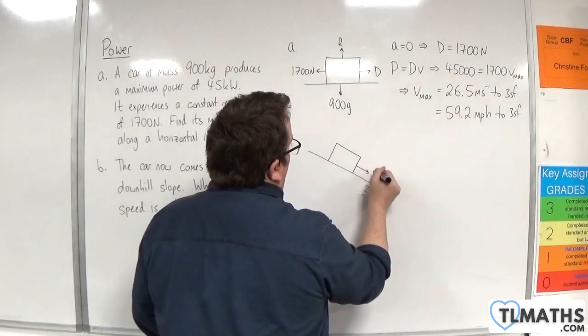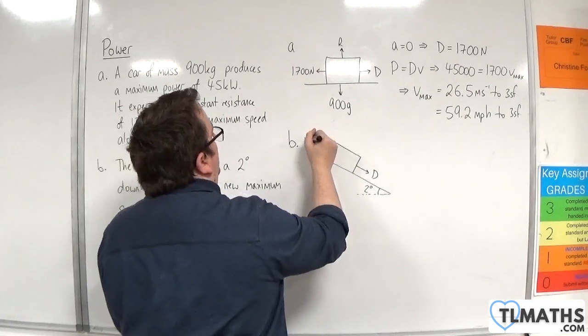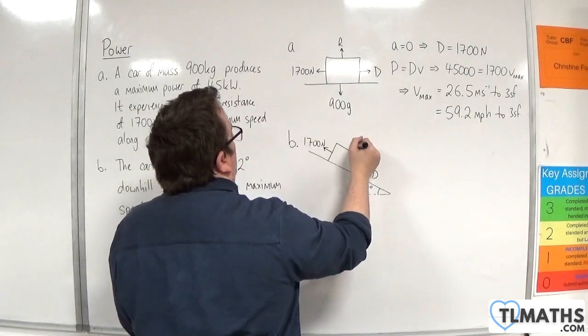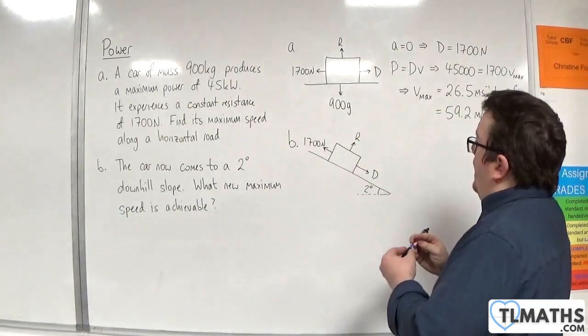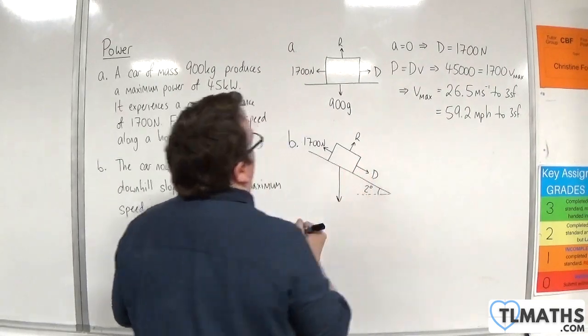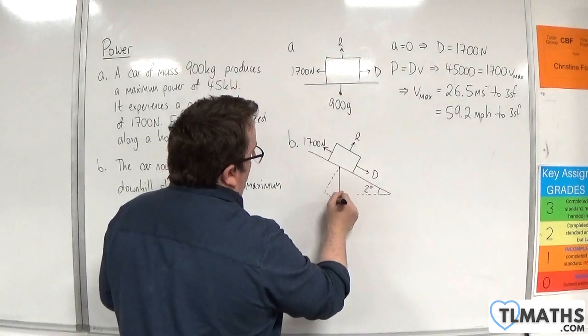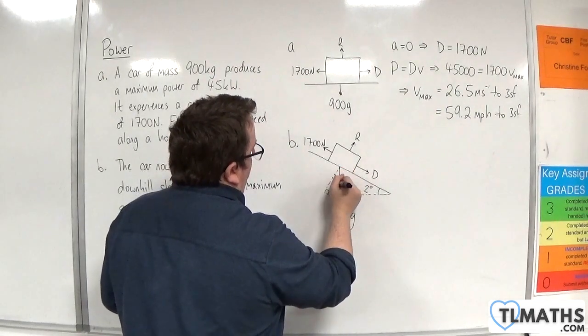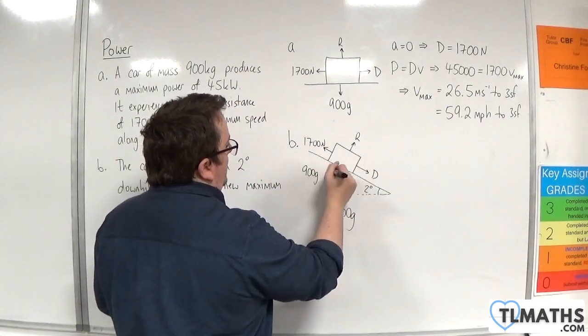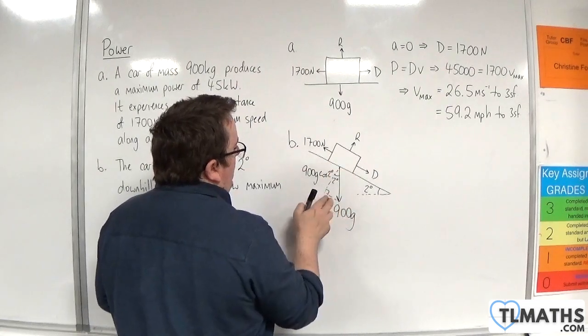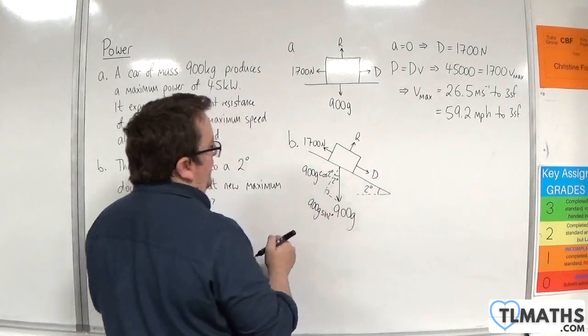There is going to be the driving force acting down the slope. We're going to have the resistance force, 1700 newtons. We've got the normal reaction force perpendicular to the slope. And then we have the weight acting vertically downwards, so 900 G. So let's complete the right angle triangle there. That's two degrees. This is the adjacent side, so that's 900 G cosine of two degrees. And this is 900 G sine of two degrees. That's the opposite side.